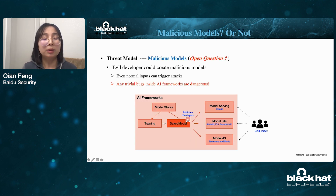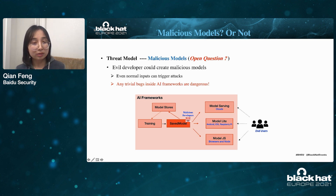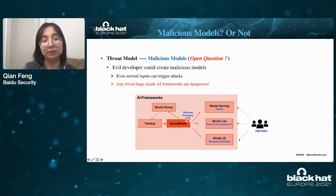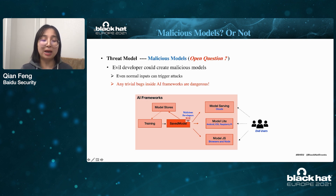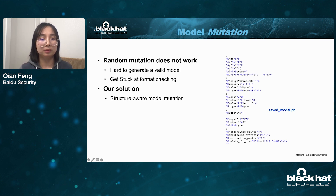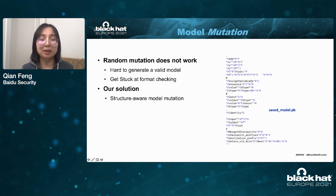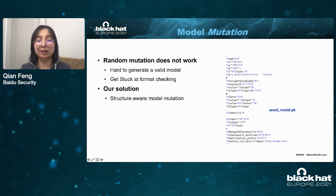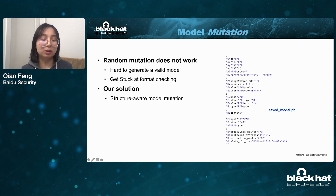However, how can we guarantee these models are safe? If not, these models could exploit vulnerabilities inside the AI framework to launch an attack. This will put all upstream services in danger — any tiny bugs inside the AI framework are dangerous. So fuzzing AI frameworks becomes very important. Since all the troubles start from the saved model, we would like to conduct fuzzing directly on the saved model. Random mutation is not a good choice because it's hard to generate a valid model by manipulating bytes in the saved model files.